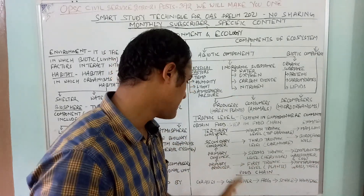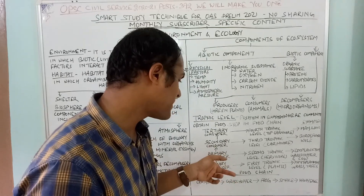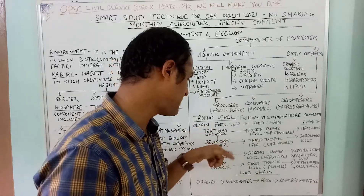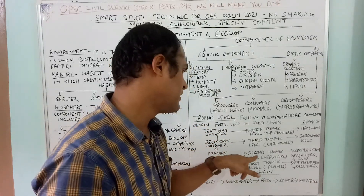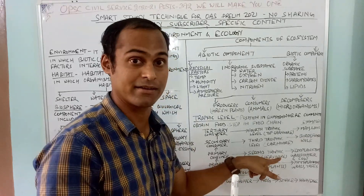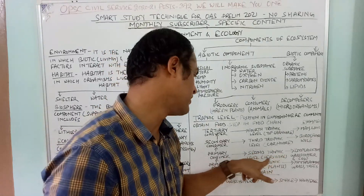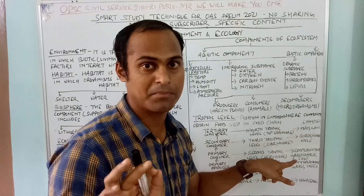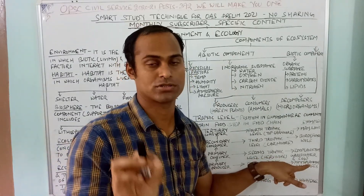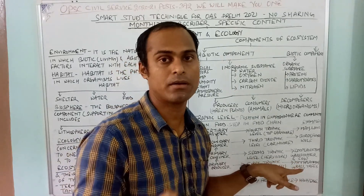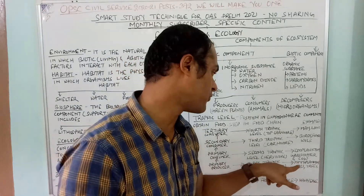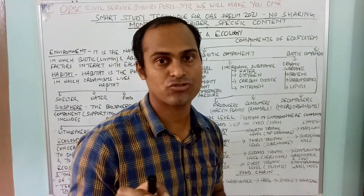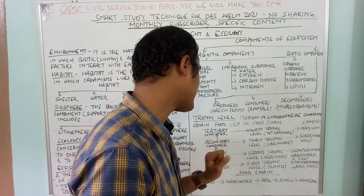The second trophic level is the primary consumer — herbivores and organisms that depend directly on plants and plant products. Examples include zooplankton, grasshoppers, and cows.